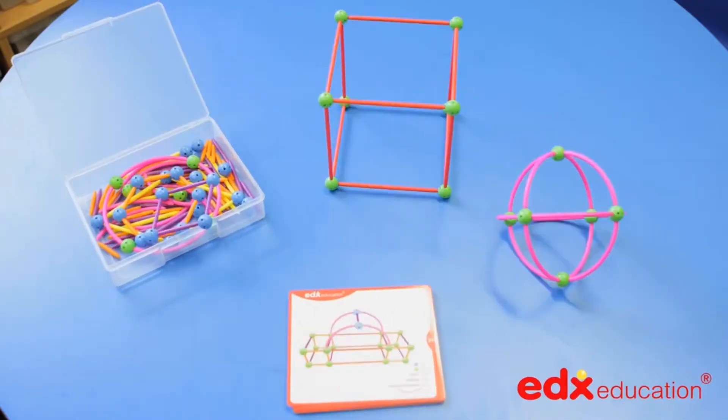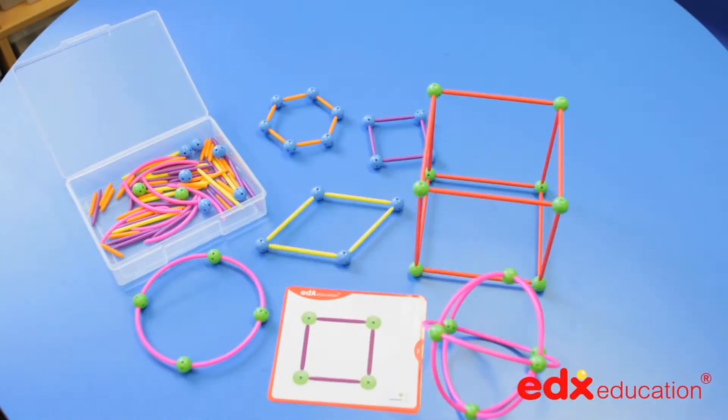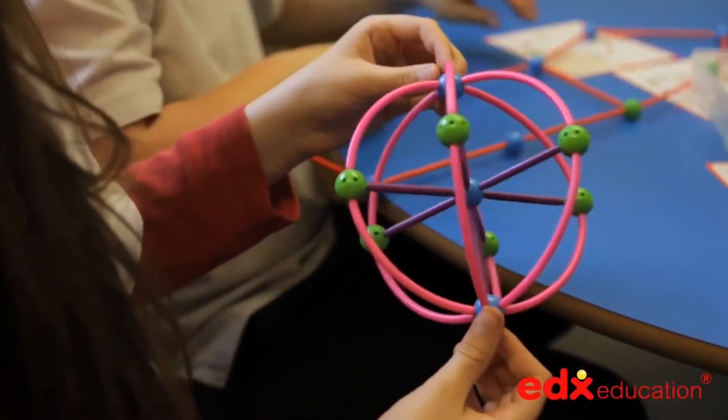The set comes in a snap-top clear box with 20 double-sided laminated work cards filled with ideas arranged as a set to provide progression from 2D to more complicated 3D shapes.